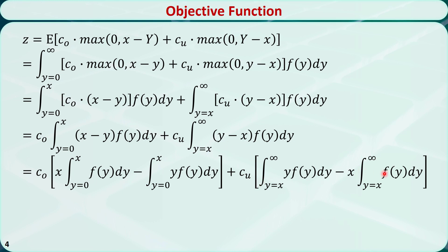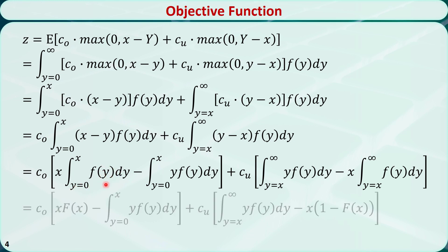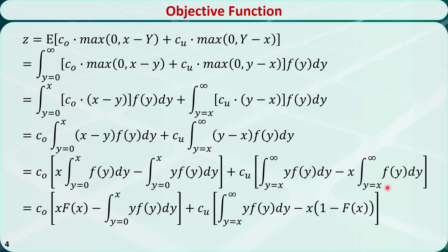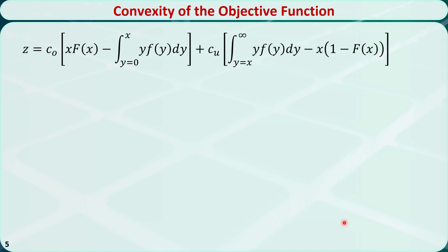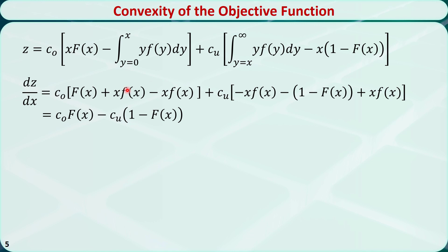Similarly, we can also split this integral into two integrals. It turns out that one item is the cumulative distribution function for the demand Y being less than or equal to x, and the other item is 1 minus the cumulative distribution function. It turns out this objective function is a convex function of the order quantity x. We take the first order derivative with respect to x to show this.